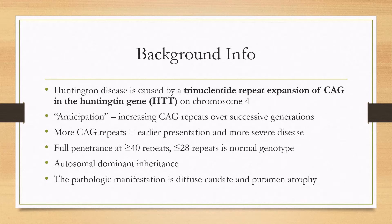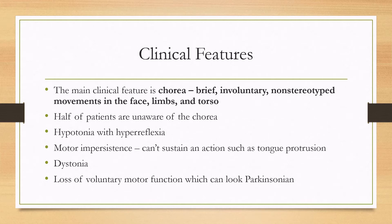The inheritance is autosomal dominant, and most patients with genetically confirmed Huntington do have a family history. The main pathologic manifestation is diffuse caudate and putamen atrophy. The main clinical feature of Huntington disease is chorea — brief, involuntary, non-stereotyped movements in the face, limbs, and torso. About half of patients are actually unaware that they're having chorea, as it may blend in with their normal movements.